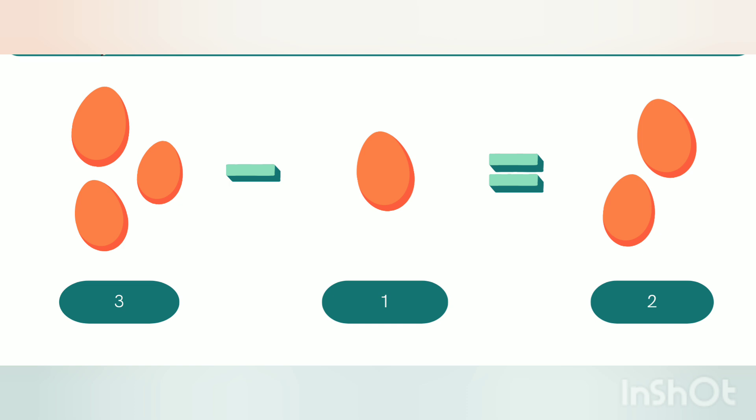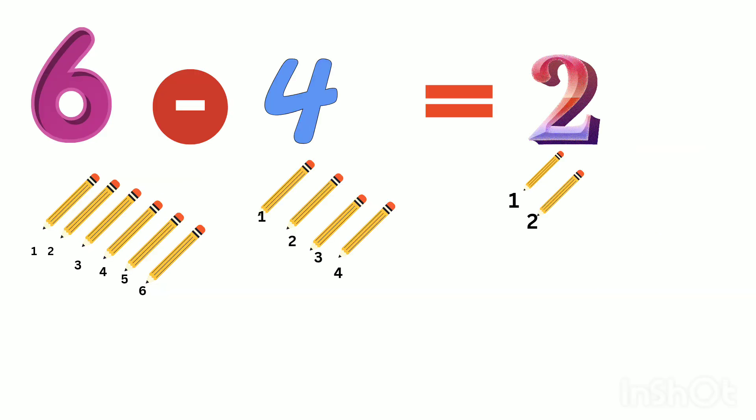three minus one, we get two as the answer. Here we have some pencils: six minus four gives two. Six pencils minus four pencils gives two pencils. Let's count: one, two, three, four, five, six. If we subtract six minus four — one, two, three, four — we get the answer as two.